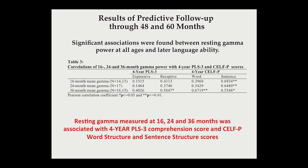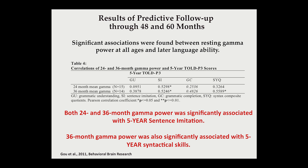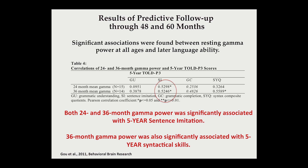At 16, 24, and 36 months, resting gamma was associated with four-year language comprehension scores and word structure and sentence structure scores. At 24 and 36 months, gamma power was significantly associated with five-year sentence imitation, which is really important for pre-readers. 36-month gamma power was also significantly associated with five-year syntactical skills. The take-home message is that the capacity to generate higher power in the gamma range at these crucial developmental periods may index better modulation of attention and allow easier access to working memory, providing an advantage for overall development, particularly in the linguistic domain.